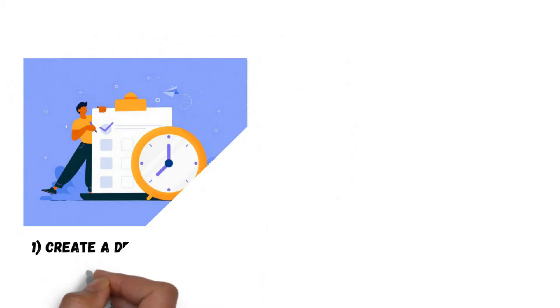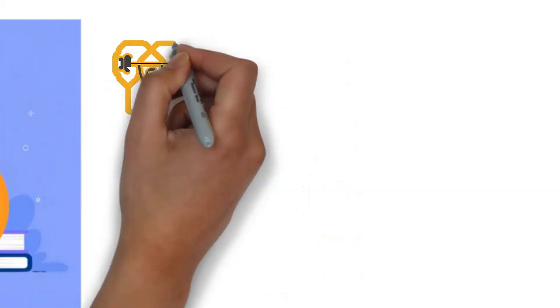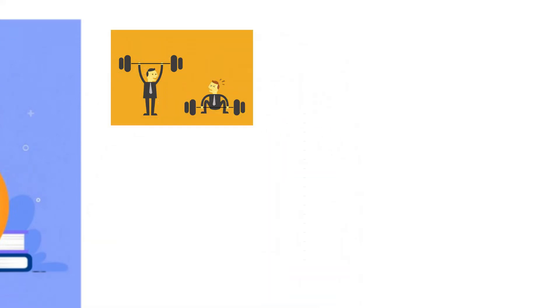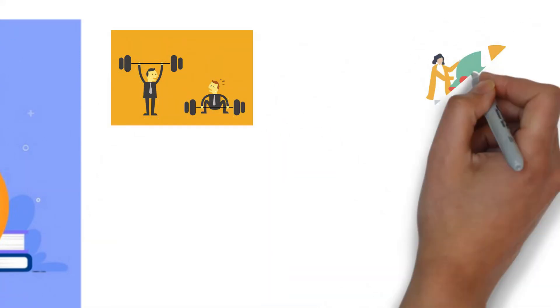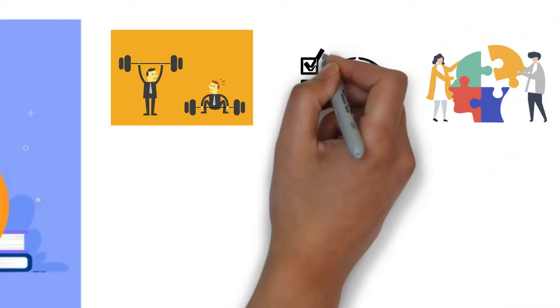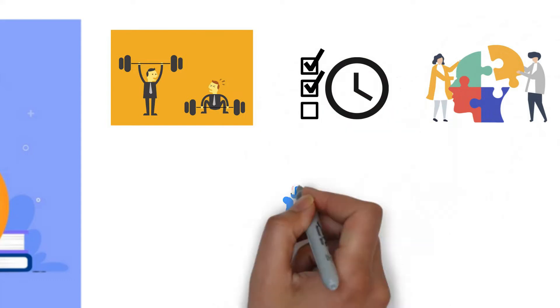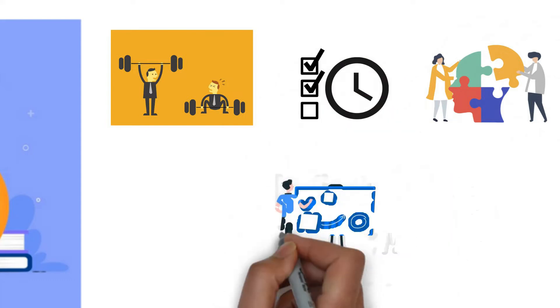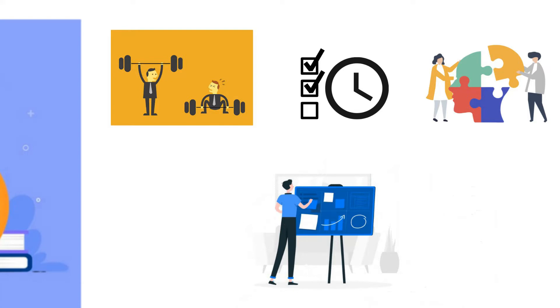1. Create a detailed schedule. By this time, you would have a decent idea of your strengths and weaknesses. You'd also have identified key concepts that you still need to master. So use this time to do exactly that. Plan out your day and divide your time among the sub-topics that you still need to revise.